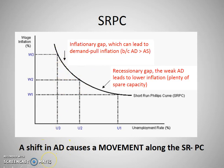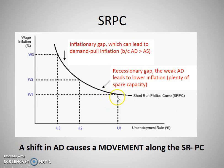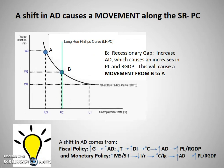A shift in aggregate demand causes a movement along the short run Phillips curve. It's also useful to know where an inflationary gap and a recessionary gap appear on the SRPC. An inflationary gap features low unemployment and higher inflation — that would be on the left side of the curve. A recessionary gap has high unemployment and lower inflation — that would be over at U1 on the right side.